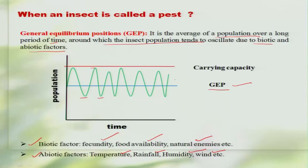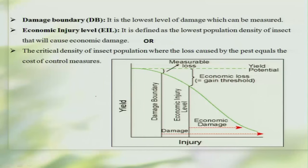One important thing to note is that any increase in population does not reach beyond a certain point, which we call the carrying capacity. Once the population reaches the carrying capacity, one of these factors will actually interfere and bring down the population. When an insect population is in a general equilibrium position, whether that population is going to cause a significant loss in a particular crop is a matter of concern. We have to find what population can be considered as one which causes an economic injury.